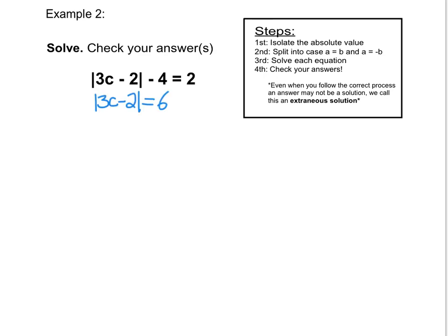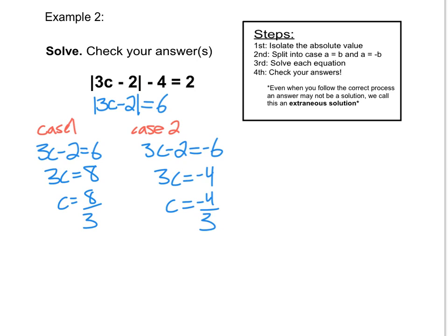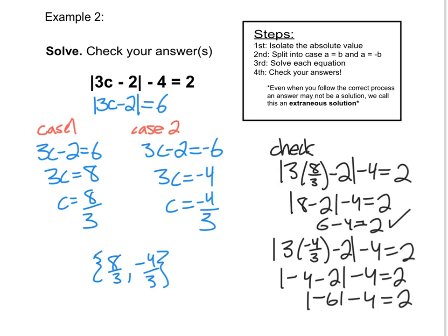We have the absolute value of 3c minus 2 equals 6. That means 3 times some number, decreased by 2, is 6 units away from zero. So we have two cases: either 3c minus 2 equals 6, or 3c minus 2 equals negative 6. These will both work because when we take the absolute value, we will end up getting a positive distance. Solving each separately, c is either 8 over 3 or negative 4 over 3. Checking both in the original equation: on the first one I get 6 minus 4 equals 2, which is true. On the second one, I have the absolute value of negative 6, which is positive 6, minus 4 equals 2. Both are solutions.